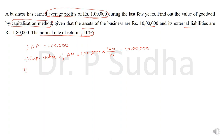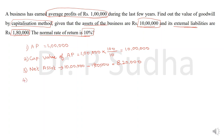The third step: calculate net asset, which is assets minus liabilities. The assets of the business are 10 lakhs and the external liabilities are 1 lakh 80,000, so net asset is 10 lakhs minus 1 lakh 80,000, giving 8 lakhs 20,000. Then the fourth step: goodwill is capitalized value of average profit minus net asset — 10 lakhs minus 8 lakhs 20,000 — so goodwill is 1 lakh 80,000.